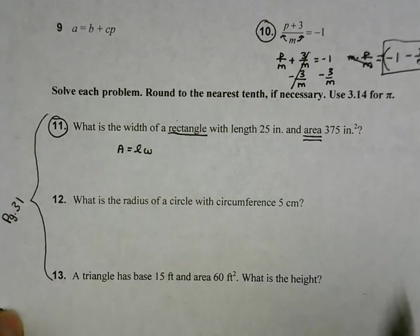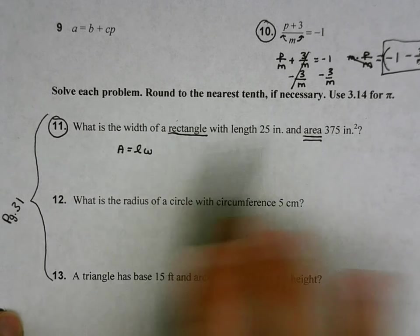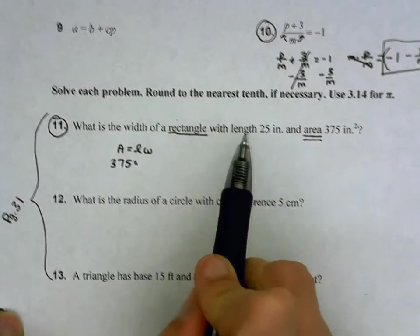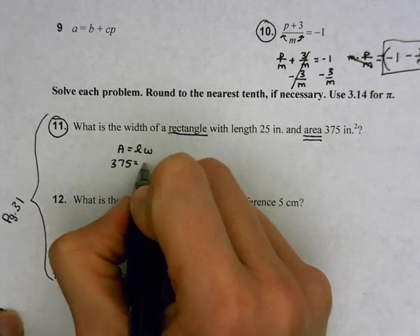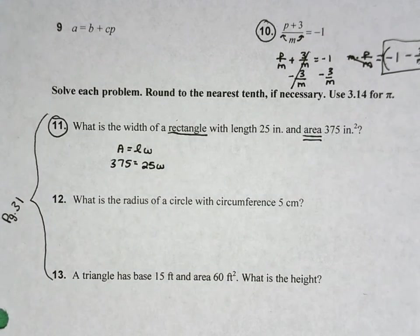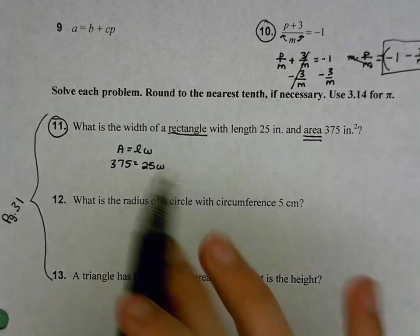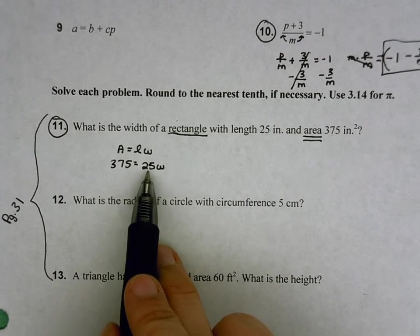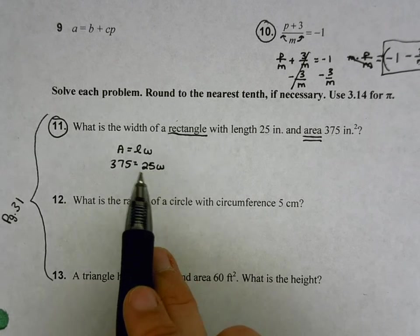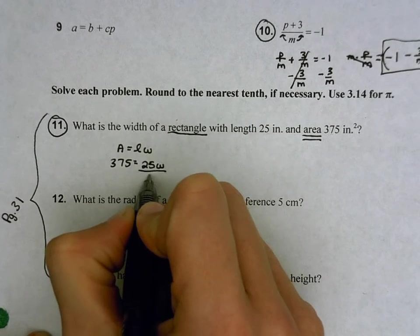And so then it's going to be plugging in. Our area was 375, so that 375 is going to go into the area spot. My length was 25. And then I don't know what my w is. And so at this point, I'm going to now solve for that variable for that w. And I'm looking, the only thing stuck to the w is the 25. And when a number sits right next to a variable like that, that means multiplication. And so to undo multiplication, we're going to divide.